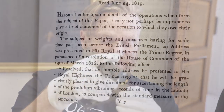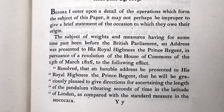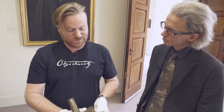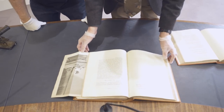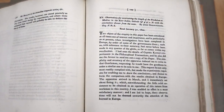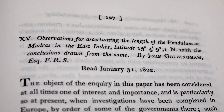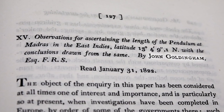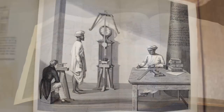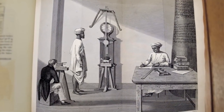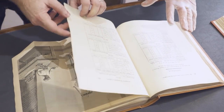We have a paper here by Cater himself, who developed it, talking about it. He's using it in Great Britain, but it did go further afield, because there's another paper here, just a couple of years after Cater's, where they're conducting observations for ascertaining the length of the pendulum at Madras in the East Indies — so this is out in India. John Goldingham has got the job. He's a Fellow of the Royal Society.